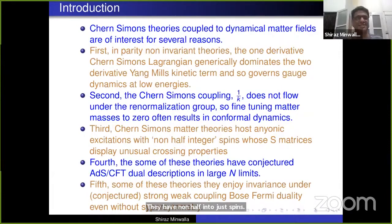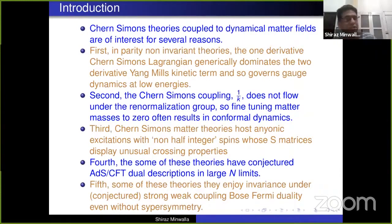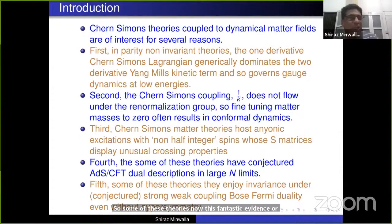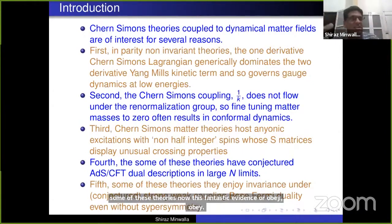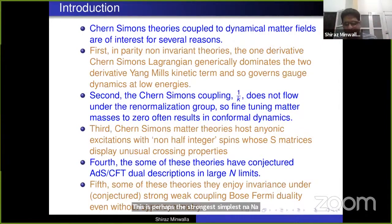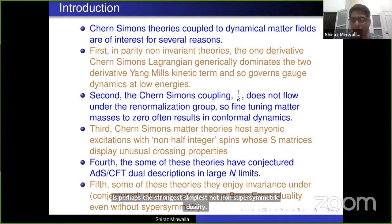The S-matrices display unusual crossing properties — we were just discussing this in the discussion session. Fourth, some of these theories have conjectured AdS-CFT duals ranging from the usual like ABJM theory to the exotic like Vasiliev theory. Fifth, some of these theories — and there's now fantastic evidence — obey invariance under a strong-coupling-type boson-fermion duality, perhaps the strongest, simplest non-supersymmetric duality in higher than two dimensions.